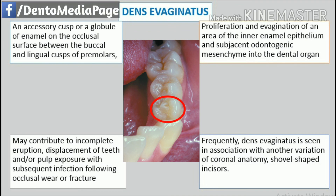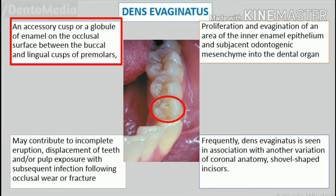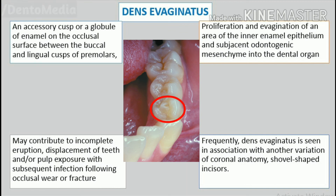Dens evaginatus is a developmental condition that appears clinically as an accessory cusp or a globule of enamel on the occlusal surface between the buccal and lingual cusps of premolars, unilaterally or bilaterally, although it has been reported to occur rarely on molars, cuspids, and incisors. The pathogenesis is thought to be the proliferation and evagination of an area of the inner enamel epithelium and subjacent odontogenic mesenchyme into the dental organ during early tooth development.